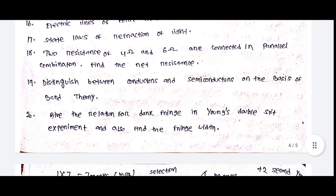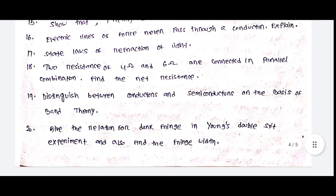Two resistances of 4 ohm and 6 ohm are connected in parallel combination. Find the net resistance. For parallel combination: 1/R = 1/R1 + 1/R2. For series combination: R = R1 + R2. Each question will be either parallel or series.